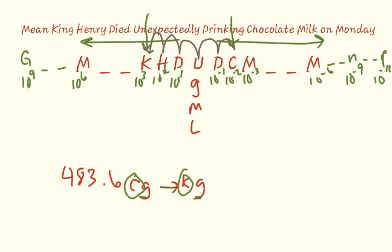Whatever we do to the spaces we also do the decimal. So since we went five spaces to the left with our mnemonic device we'll do the same with the decimal. One two three four five. Drop the decimal and any space that you have any empty spaces you're going to fill those with zeros. And so after our conversion our answer would be 0.004836 kilograms.